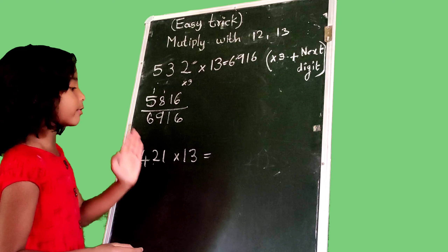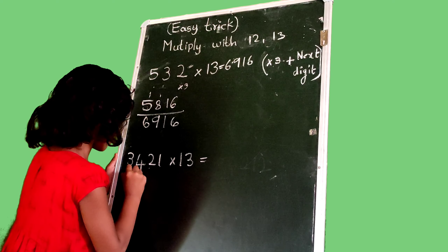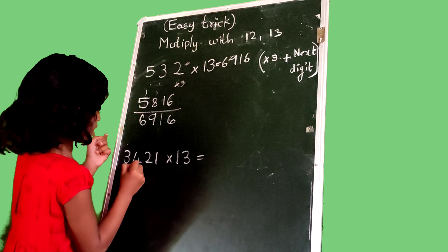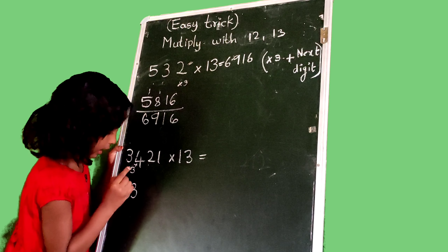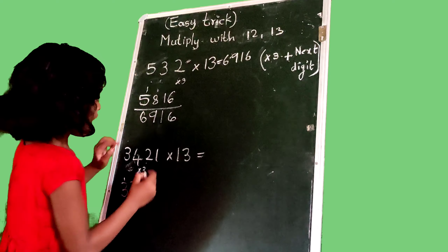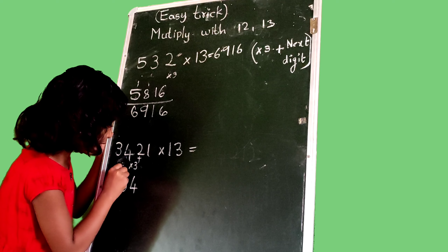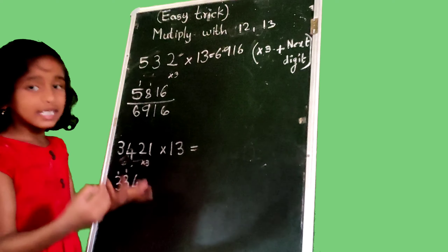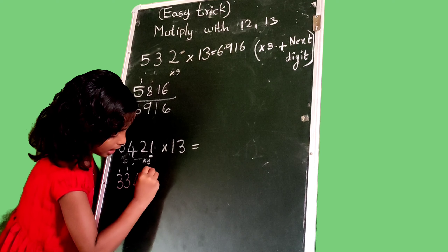Next example: 3,421 multiply with 13. We drop 3 as this and we multiply with 3: 3 times 3 is 9. Add next number: 9 plus 4 is 13. We write 3 and carry 1. Then 4, we multiply with 3: 4 times 3 is 12. Add next number: 12 plus 2 is 14. We write 4 and carry 1. Then 2, we multiply with 3: 2 times 3 is 6. Add next number: 6 plus 1 is 7. We write 7.